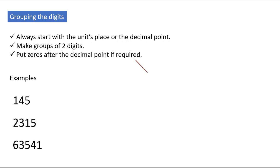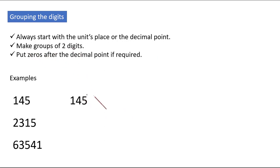Let us look at some examples. The first one is 145. Always start with the units place or the decimal point. The units place is 5, and we make a group of two digits, so 45 will make the first pair. Since 1 is left alone, it will be considered as one group — we can imagine a zero written there, so 01 is another group.